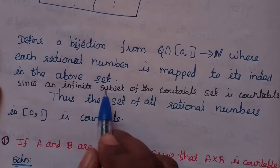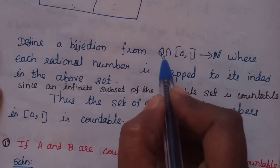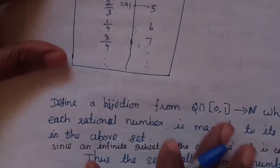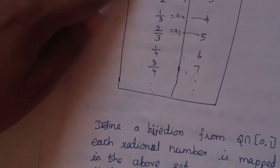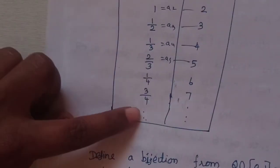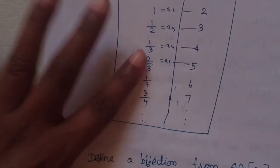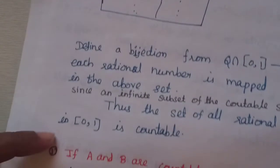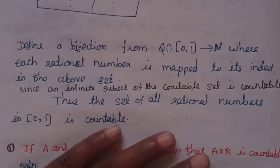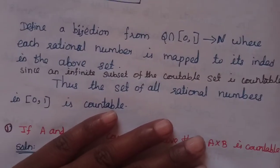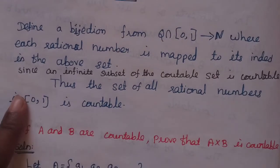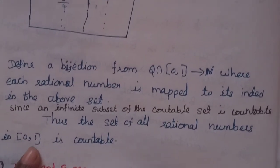Since this is an infinite subset of the countable set of all rationals, and since an infinite subset of a countable set is countable (proved in the previous video), thus the set of all rational numbers in the closed interval 0,1 is countable.